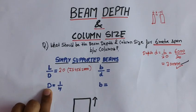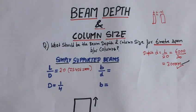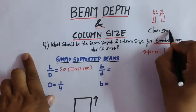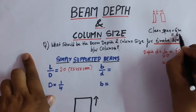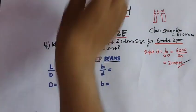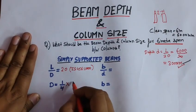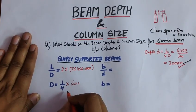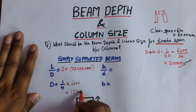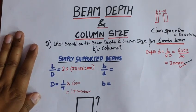This depth value T should also not be more than one-fourth of the clear span. Our clear span is 6 meters, equal to 6000 mm. One-fourth of 6000 mm comes out to be 1500 mm. So depth can be taken as 300 mm.